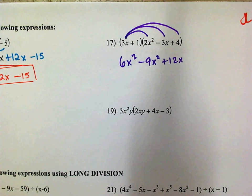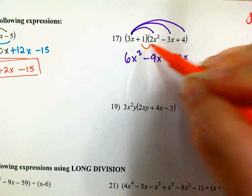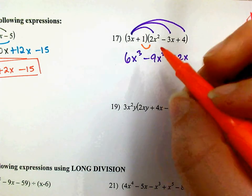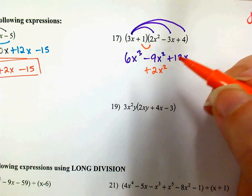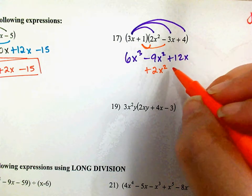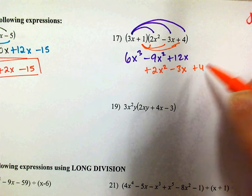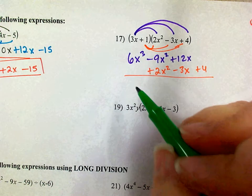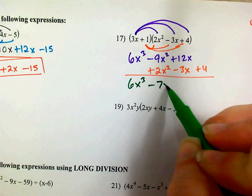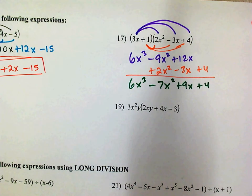Then we're going to distribute a 1. When you multiply something by 1, it does not change it. So 1 times 2x squared is 2x squared — I'll stack that underneath the 9x squared as they have the same power. 1 times negative 3x is negative 3x. 1 times 4 is 4. Combine like terms: 6x cubed minus 7x squared plus 9x plus 4. There's your answer.